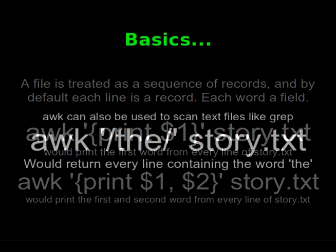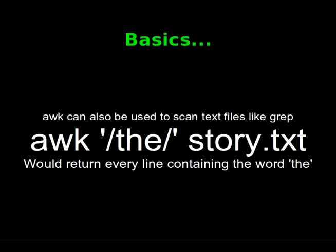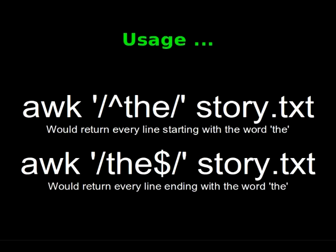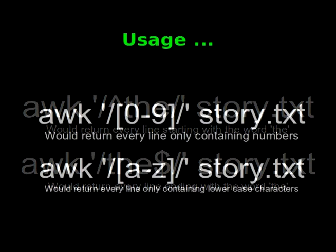AWK can also be used to scan text files like grep. We could call AWK with a regex value in between two forward slashes. AWK '/the/' story.txt would return every line containing the word "the". AWK with the caret symbol in the regex value followed by the word "the" would return every line starting with the word "the", and likewise we can use the dollar sign at the end of the regex to return every line ending with the word "the".